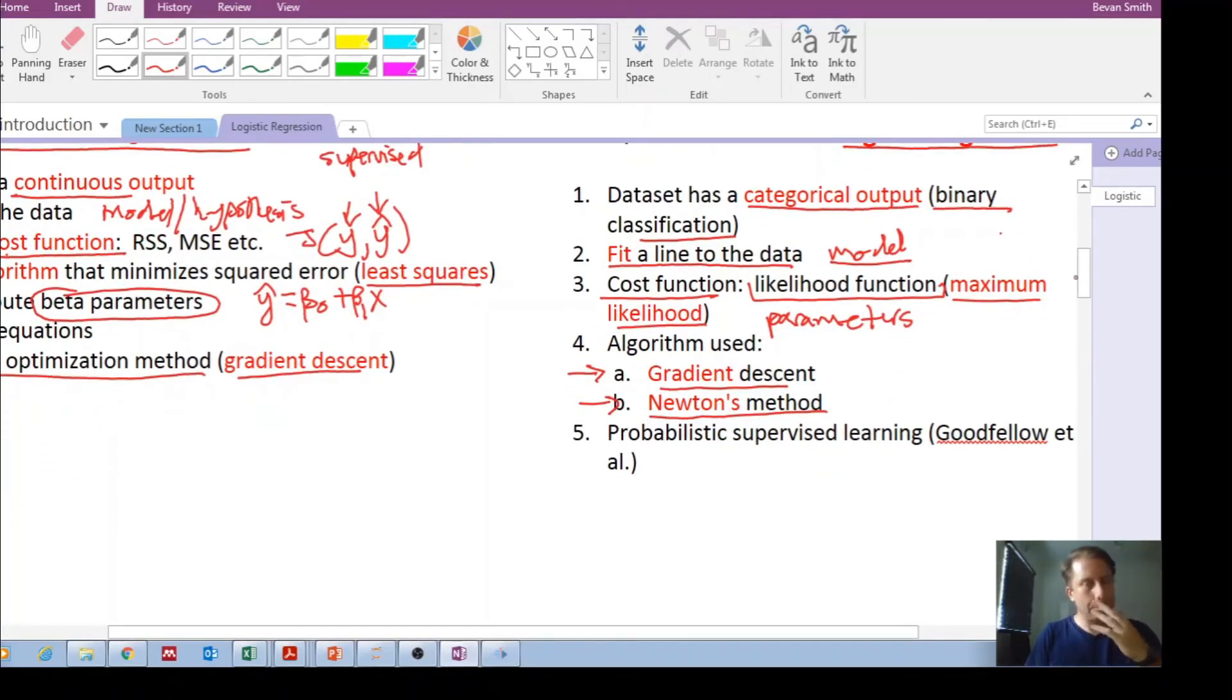And you'll see as we go on in the next couple of videos that this is a probabilistic supervised learning method. So this likelihood function, which is our cost function, really deals with probabilities.